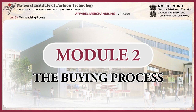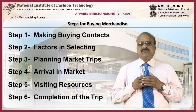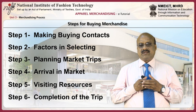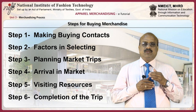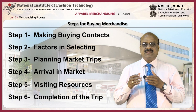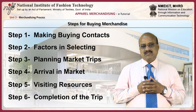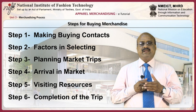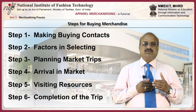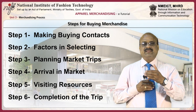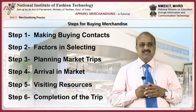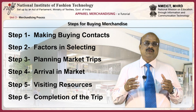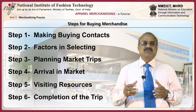This module examines the process of buying. These are the steps for buying merchandise: one, making buying contacts; second, factors in selecting the resources; third, market trip planning; fourth, arrival in the market; fifth, visiting the resources; and finally, the sixth, completion of the trip.